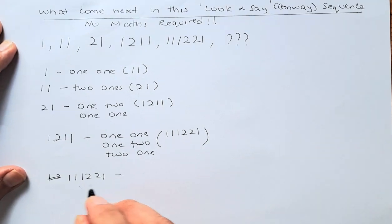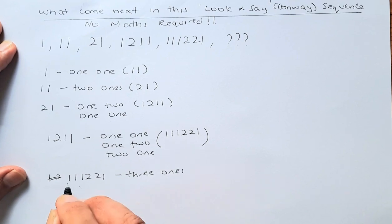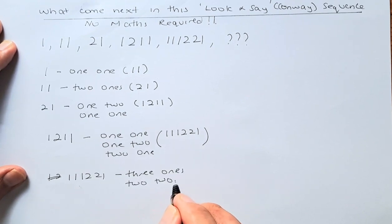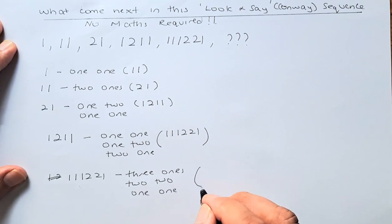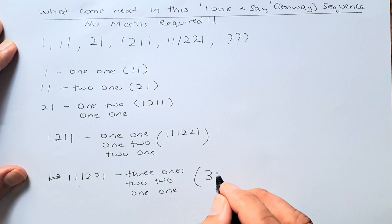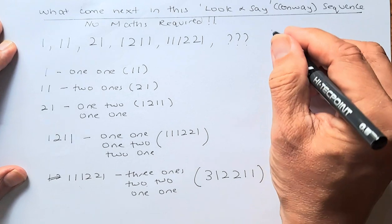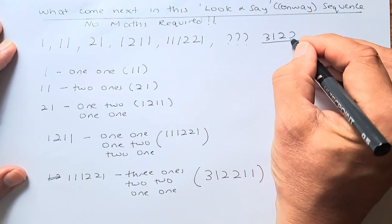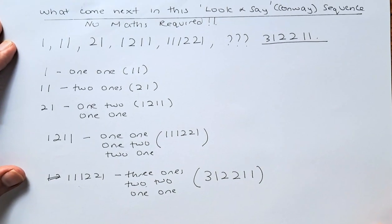Tell me, what is it going to be? It will be three ones, two twos, and one one. So your answer is going to be 3 1 2 2 1 1. Did you get it? If any of you get this, you are absolutely brilliant.